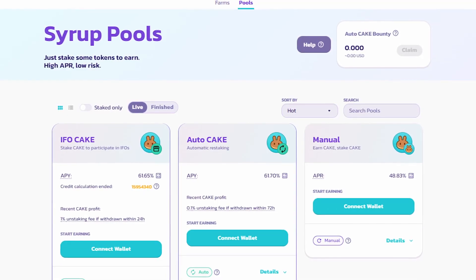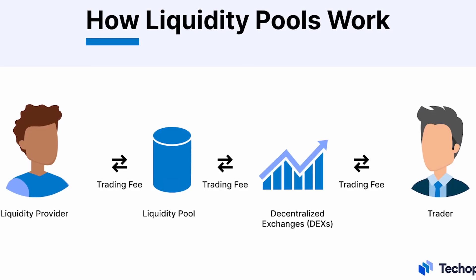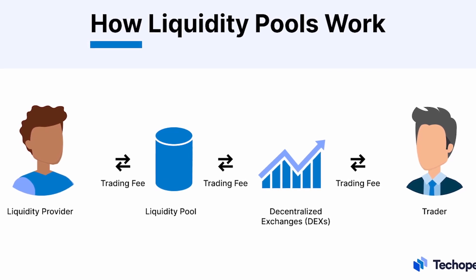On platforms like PancakeSwap, Uniswap, or QuickSwap you'll also be able to stake certain cryptos to earn money and provide liquidity. Because there is no centralized entity to facilitate exchanges, it's up to the users to put their funds into a liquidity pool. For example, there are pools full of ETH and USDT — every time a user wants to swap ETH for USDT, ETH goes in and USDT comes out, and vice versa. Each swap charges a fee that pays the platform and the liquidity providers. This is another way to make money in crypto.